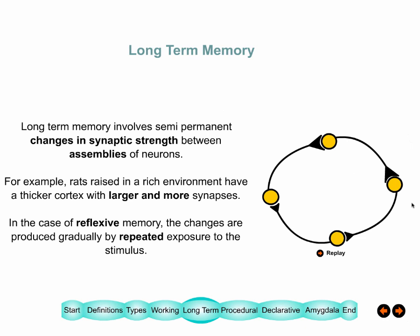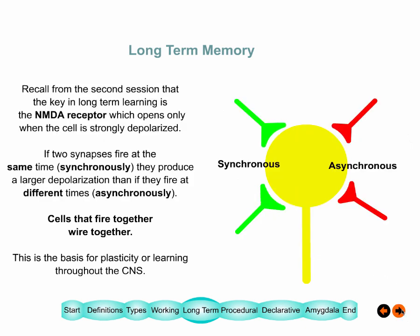Long-term memories are different — you physically change the strength of a series of neuronal connections, and these synapses become larger, with often more synapses forming. For procedural or reflexive memory you need to repeat this several times for the memory to form. The key to forming these memories is synchronous activity: two neurons firing at the same time get stronger connections, while neurons firing at different times become weaker.